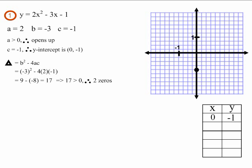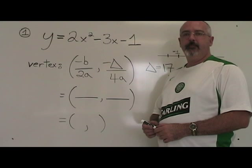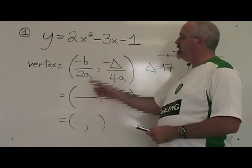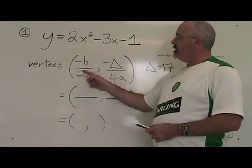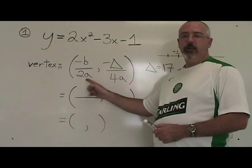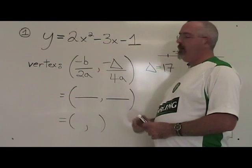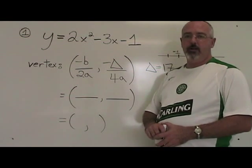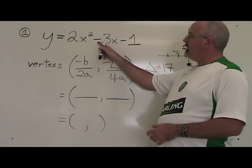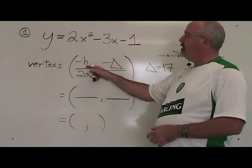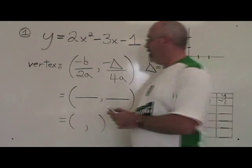This is what example 1 looks like before we find the vertex. The formula for our vertex is negative b over 2a for the x coordinate, and negative delta over 4a for the y coordinate. Our b is negative 3, so the negative of b is the negative of negative 3.